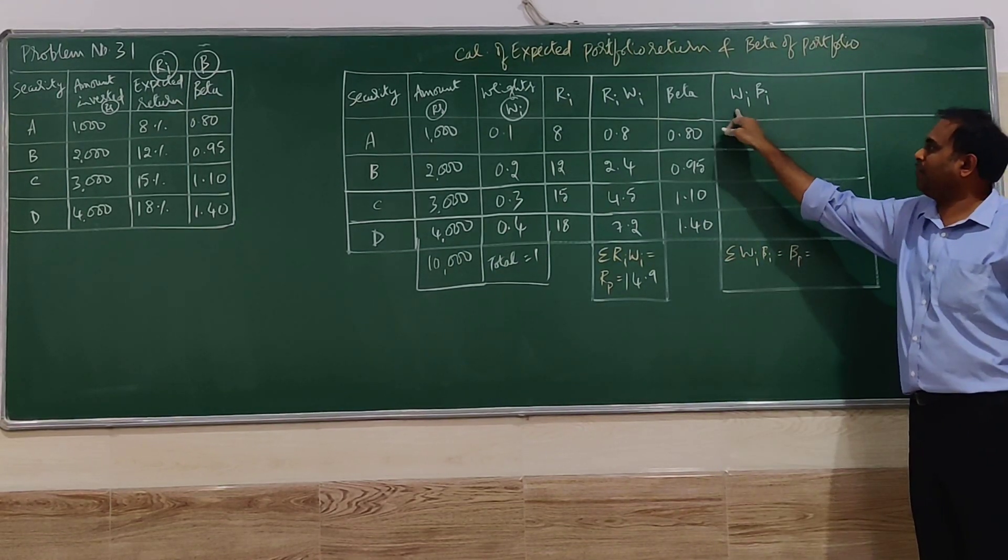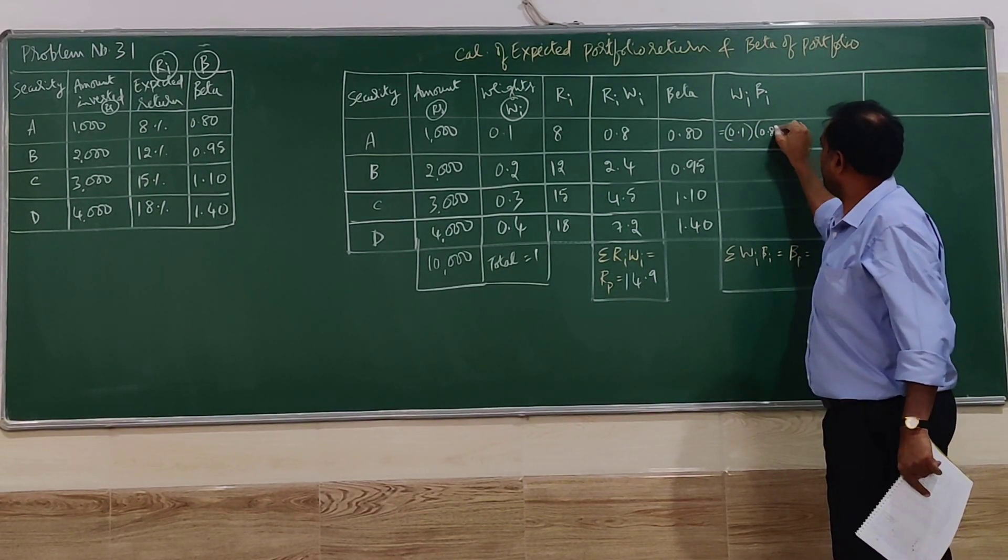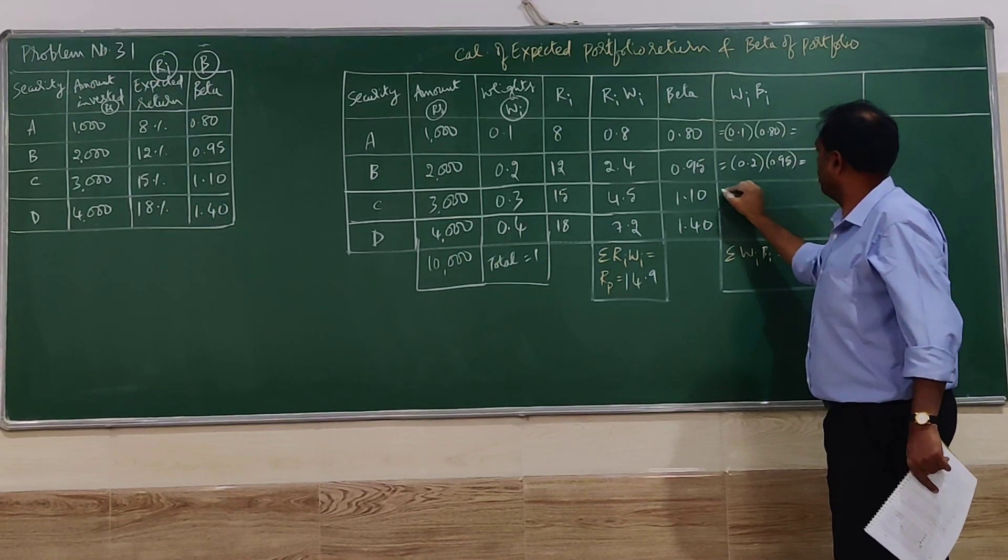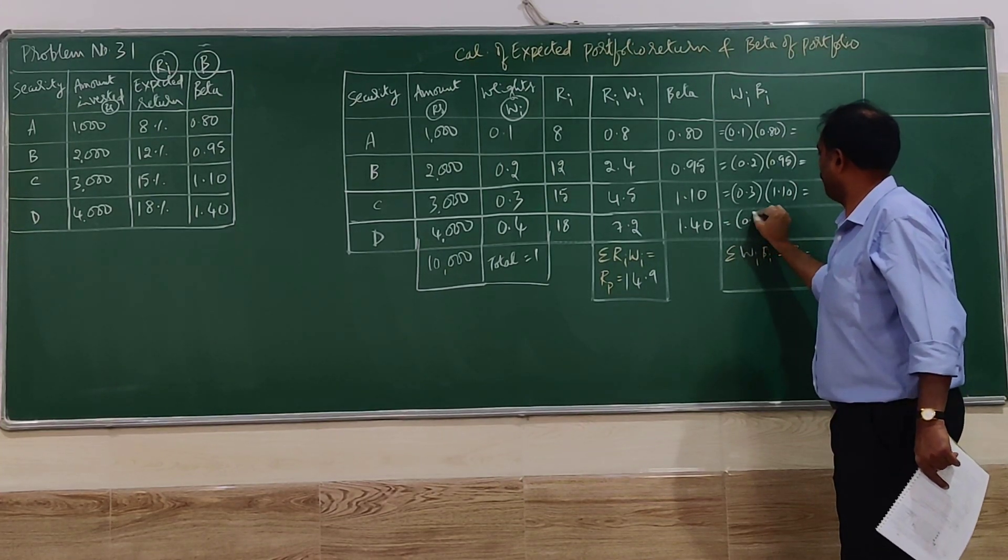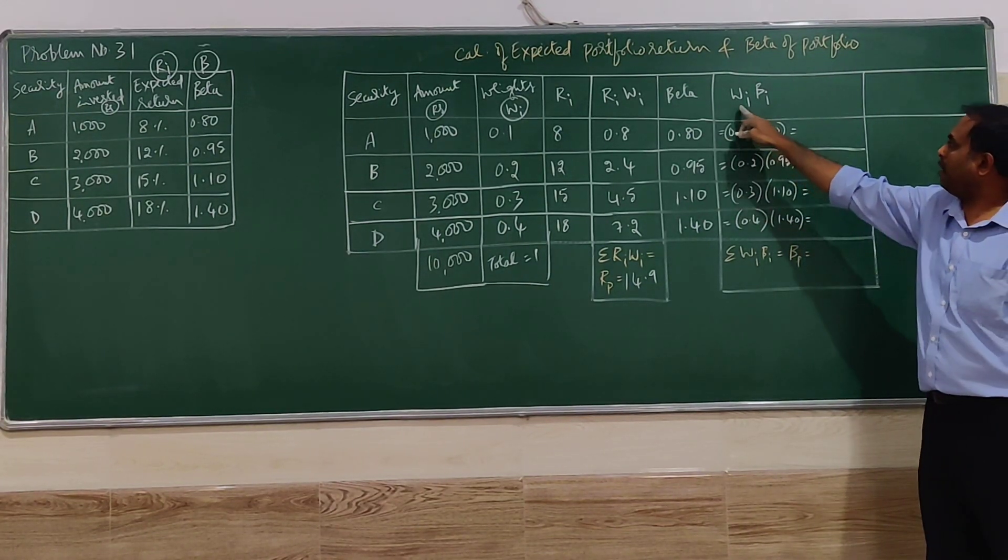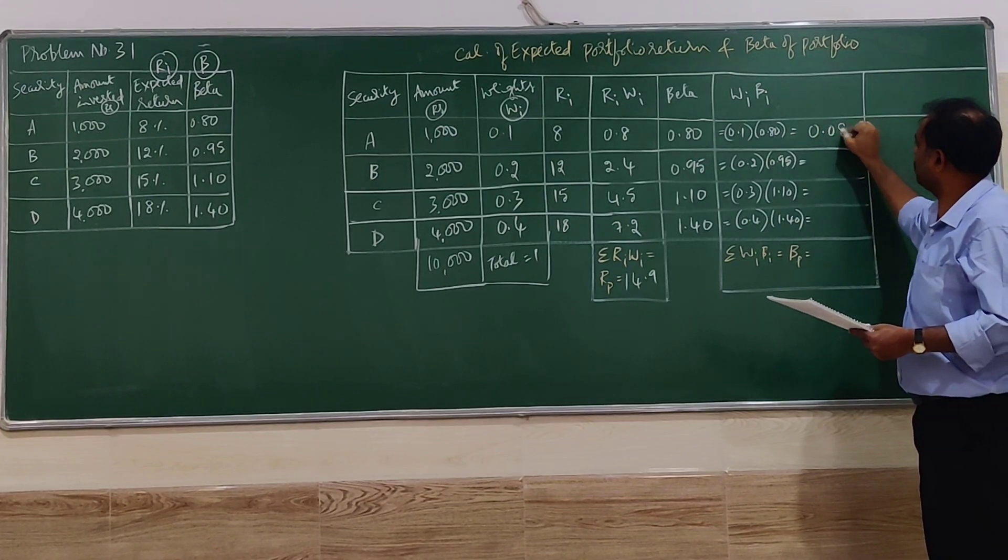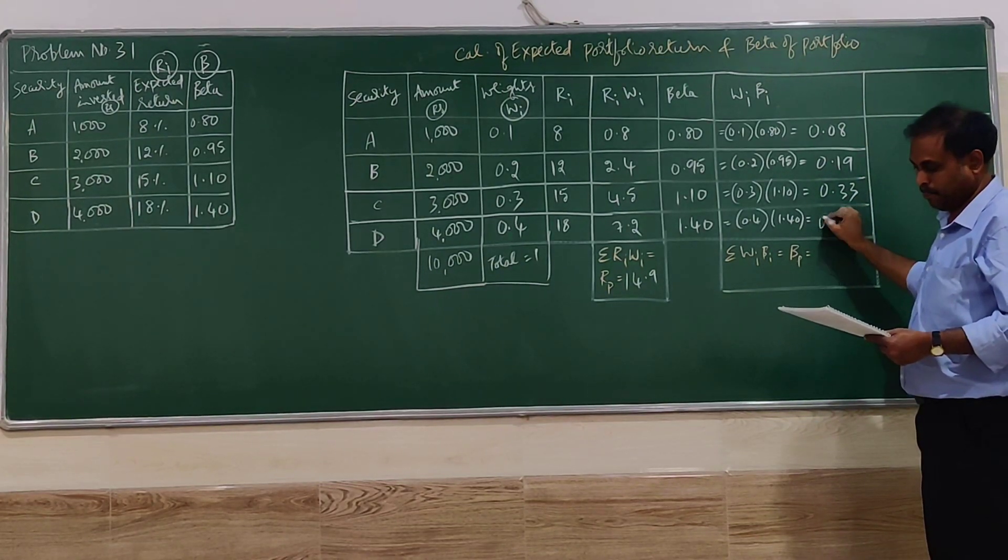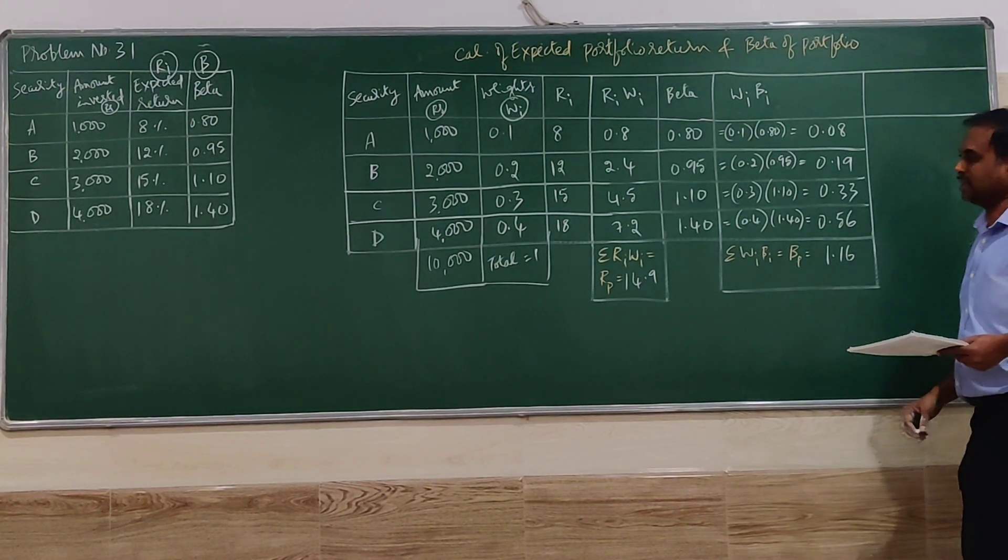Again, we have to multiply the beta with the weights here. So weights are 0.1, beta... substitute the values.